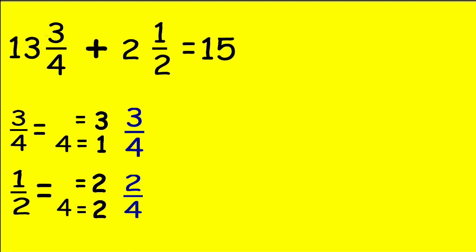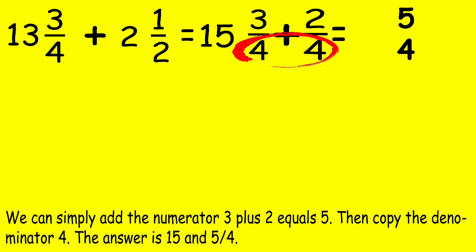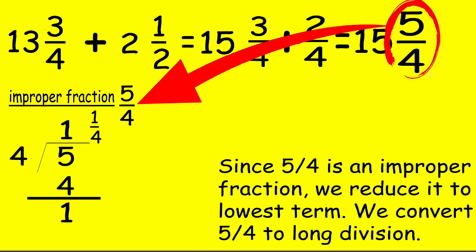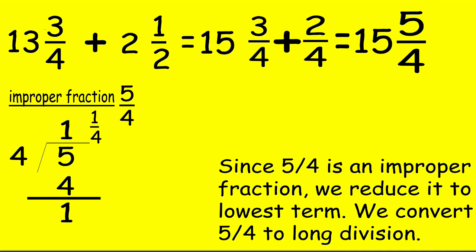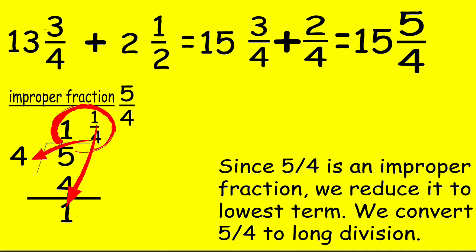The equivalent fractions are 3/4 and 2/4. We can simply add the numerators: 3 plus 2 equals 5. Then, copy the denominator 4. The answer is 15 and 5/4. Since 5/4 is an improper fraction, we reduce it to lowest term. We convert 5/4 using long division: 5 divided by 4 equals 1, 1 times 4 equals 4, 5 minus 4 equals 1. We get 1 and 1/4.